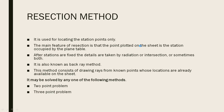If you want to locate a station point, for example if you want to locate a station, you can locate a station. The main feature of the resection method is that the point plotted on the sheet is the station occupied by the plane table. The main feature of the resection method is also called the back-ray method. We have to go from A to B, then check A to C. We have to do a back-sighting method and follow these two methods.